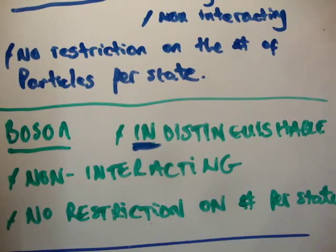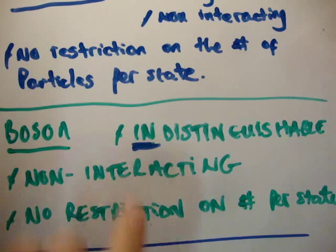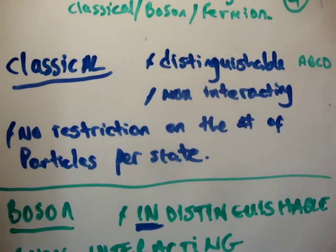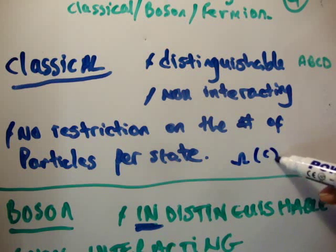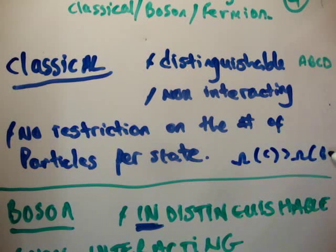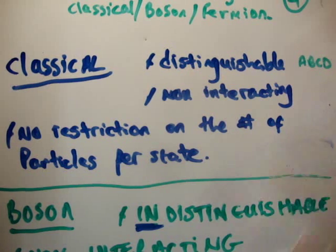Contrast that then with bosons. Bosons are indistinguishable particles. They are non-interacting, and because they are non-interacting, once again there is no restriction on the number of particles per state. However, this time they are indistinguishable. So the contrast between bosons and classical particles is that bosons are indistinguishable, whereas classical particles are distinguishable. That means the multiplicity of classical particles is greater than the multiplicity of bosons.